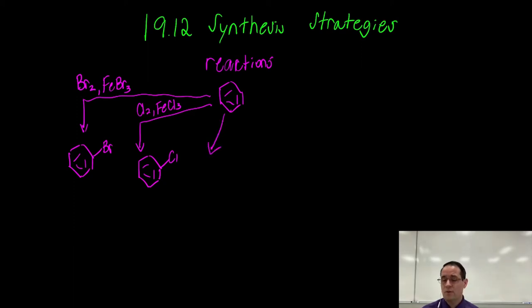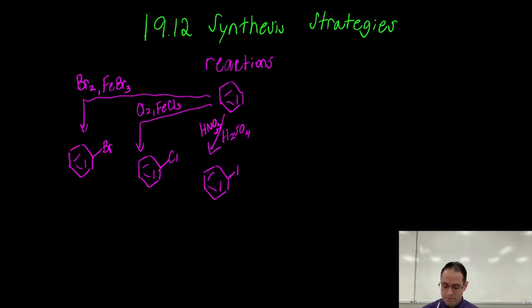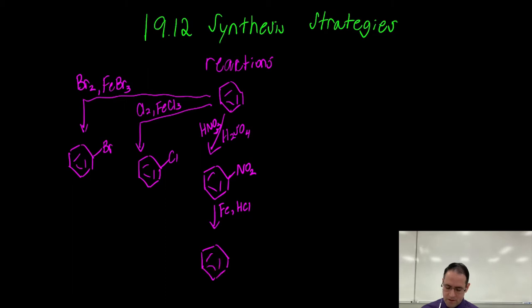Nitration uses two things — don't forget — nitric acid and H2SO4. This gives nitrobenzene. Now it's very critical to remember that nitrobenzene can be reduced. Iron or zinc and hydrochloric acid will give you aniline. That's a two-step reaction to produce aniline, but we can't put the NH2 group on the ring in one step — it has to be two.